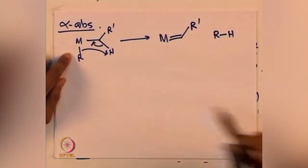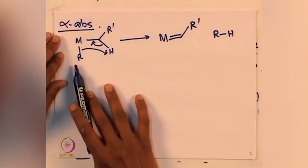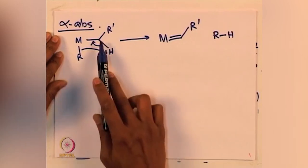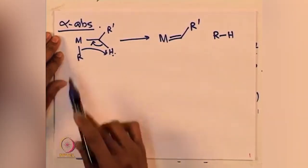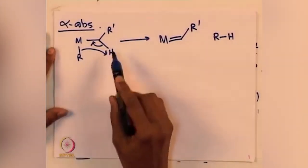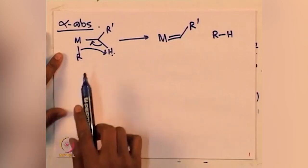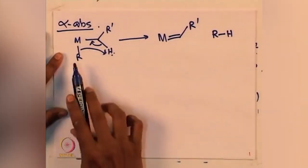The products obtained by this transformation are going to be exactly the same as those of alpha elimination and beta elimination. But there are fundamental differences that can distinguish these processes. In alpha abstraction, you have a metal alkyl species where the alpha position hydride is abstracted directly by something else attached to the metal center. There is no metal hydride intermediate bond formation. This is alpha abstraction.